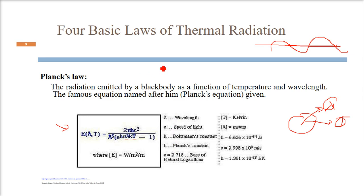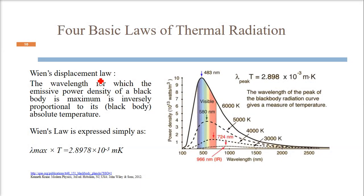Then Wien's displacement law. Wien's displacement law says that lambda is inversely proportional to the temperature. That means the wavelength for which the emissive power density of a black body is maximum is inversely proportional to its absolute temperature. Lambda into T is equal to some constant C. So lambda max, this is very important, maximum—the black body we are talking about the maximum emissive power density. Lambda max into T is some constant. If you see here, the wavelength and temperature varies like this. The wavelength of the peak of the black body radiation curve gives a measure of its temperature, as you see here.